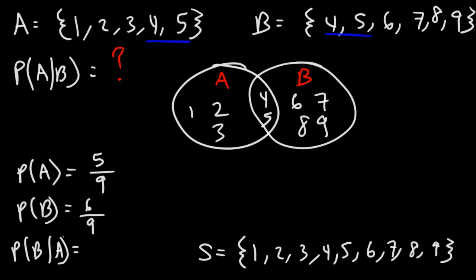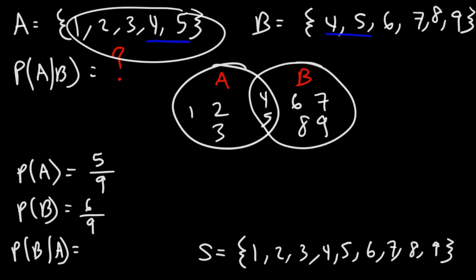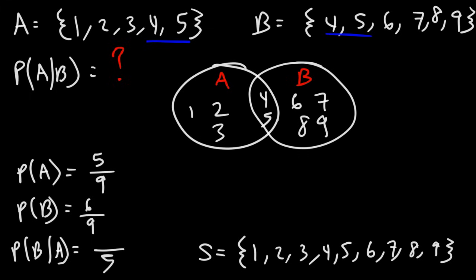What is the probability that B will occur given that A has already occurred? Thinking about it conceptually: how much of B is in A? A has 5 elements — the numbers 1 to 5. Out of those 5 numbers, only 2 are also in B. So the probability that B will occur given that event A has occurred is 2 out of 5.